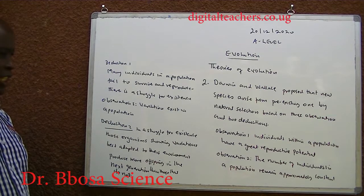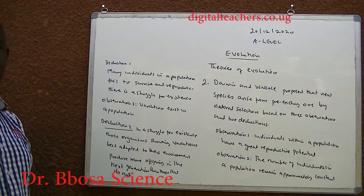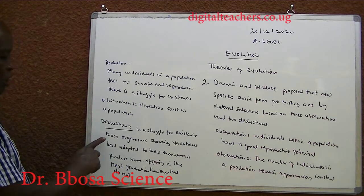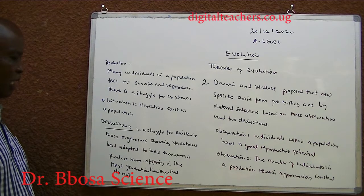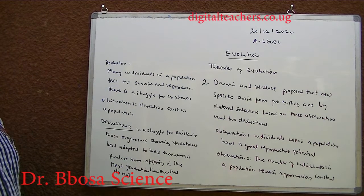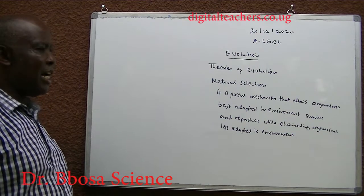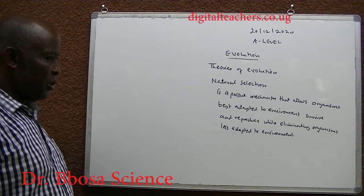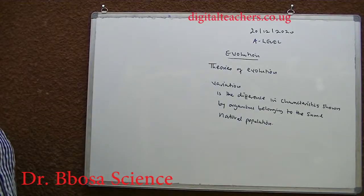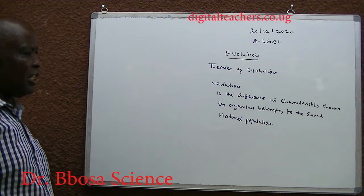Observation three: variation exists in a population. For example, in the human population, some people are tall, others are short, some are brown, and so on. In the struggle for existence, those organisms showing variations best adapted to their environment produce more offspring in the next generation than those that don't. Natural selection is a passive mechanism that allows organisms best adapted to the environment to survive and reproduce, while eliminating organisms less adapted. Variation is the difference in characteristics shown by organisms belonging to the same natural population.